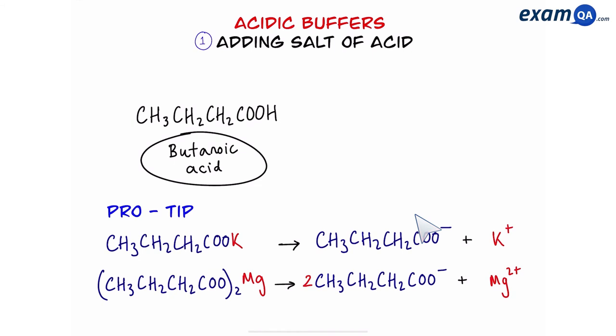One more thing. If you notice with potassium butanoate and magnesium butanoate when they break down, the first one, potassium butanoate, gives us a one-to-one ratio with the ion. But for the second one we actually get two butanoate ions for one salt. That means we have to times the number of moles by two. Again we'll do a calculation involving this later so that you can see how it's used in practice.